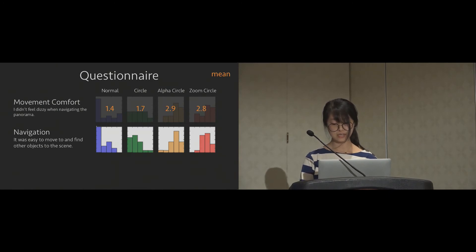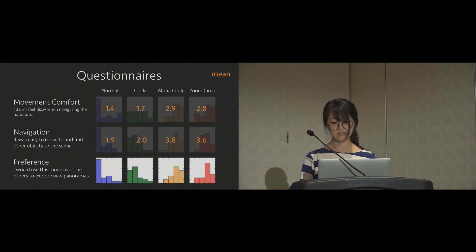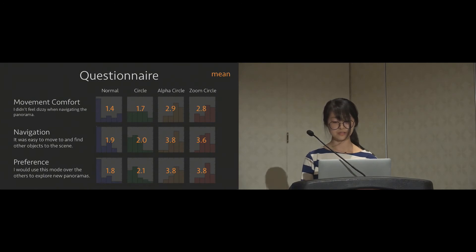We also ask how easy it is to navigate to other area and target to objects there. And the score shows a similar pattern and alpha and zoom circle mode still outperform the others. Finally, we ask which one they prefer to use to explore new panoramas. The result also looks similar.